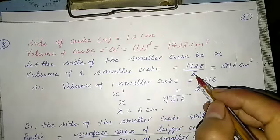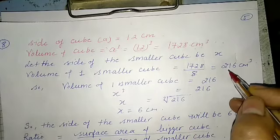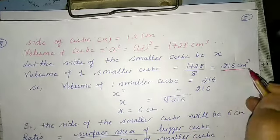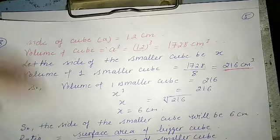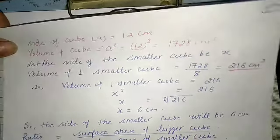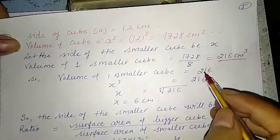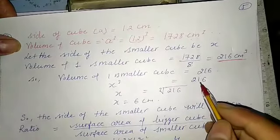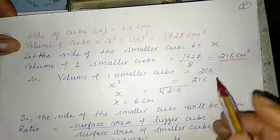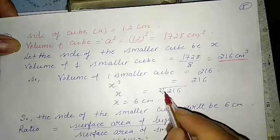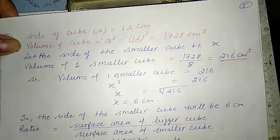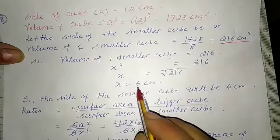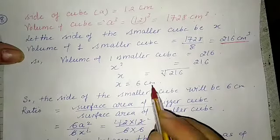Volume of one smaller cube = x³ = 216. Therefore x = 6 cm. So the side of the smaller cube is 6 centimeters.